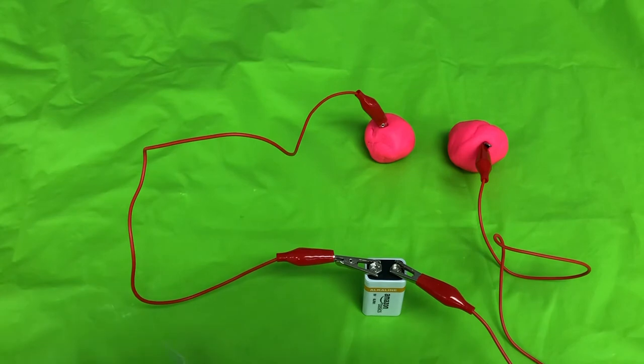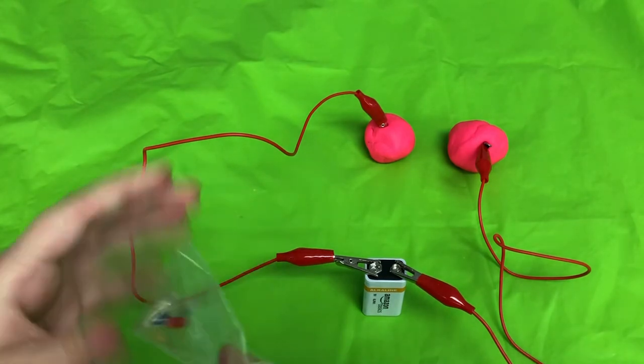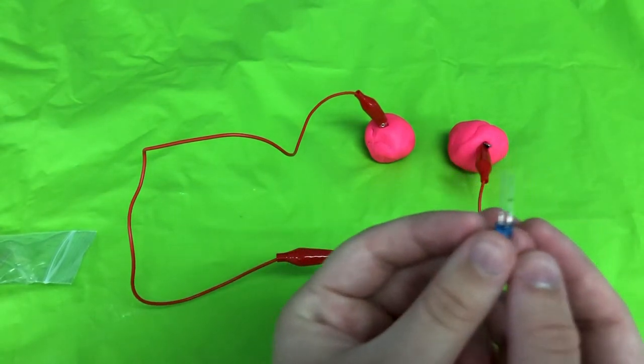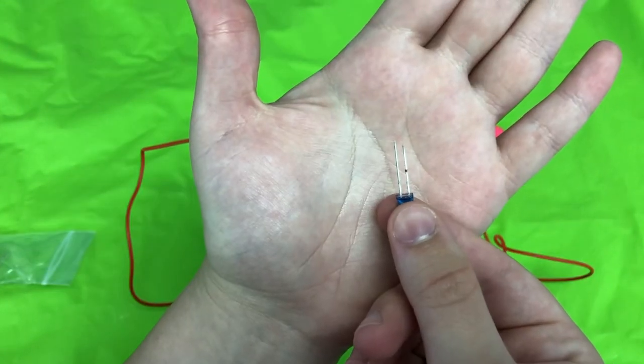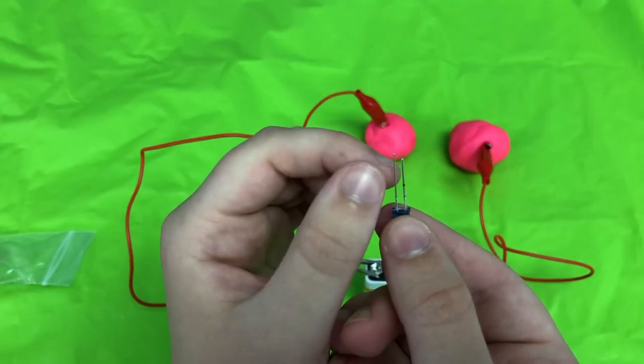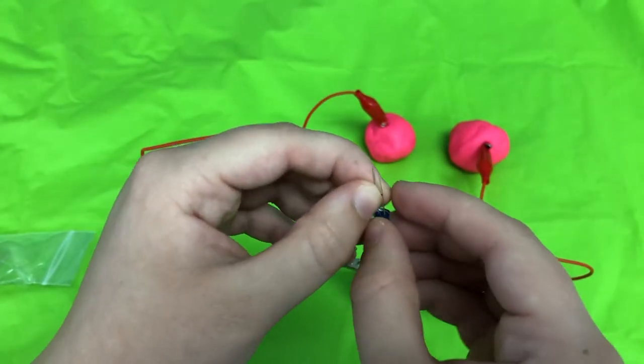So now I'm going to go ahead and take out one of the LEDs and when you look at it you can see one of the sides is a little bit longer than the other. This is going to be your positive side so the longer one is positive.